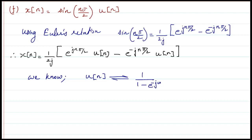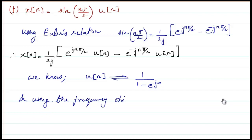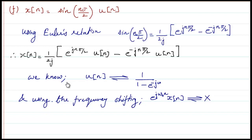We know that the DTFT of u(n) is 1 / (1 − e^(−jω)). Using the frequency shifting property: if x(n) has DTFT X(ω), then e^(jω₀n) · x(n) has DTFT X(ω − ω₀).